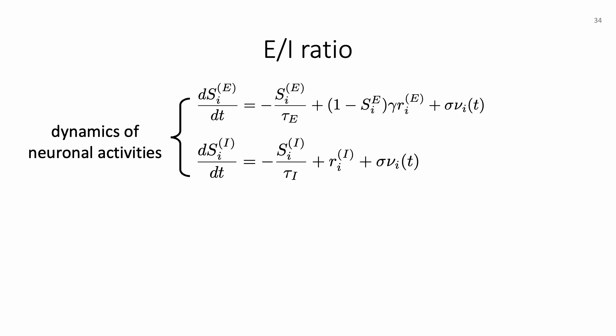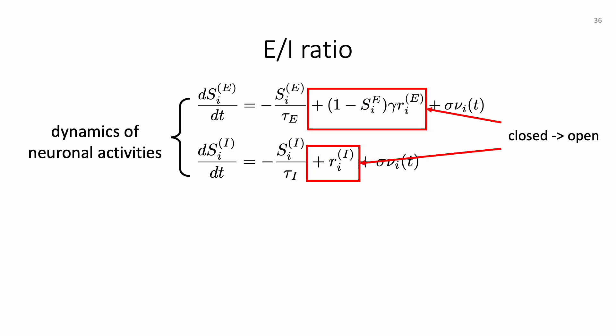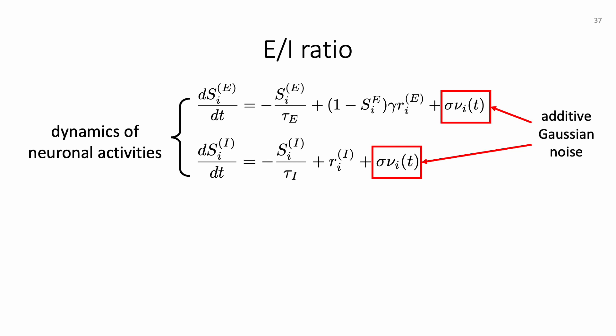Here is a summary of the dynamics of the synaptic gating variable for both the excitatory and inhibitory populations. The transition terms for the open-to-closed state depend only on the time constant, while the closed-to-open terms are proportional to the firing rate. We also introduce additive Gaussian noise for stochasticity. We can then simulate these differential equation systems numerically and use them as a generative model to generate simulated time courses of neuronal activities for each cortical region i.